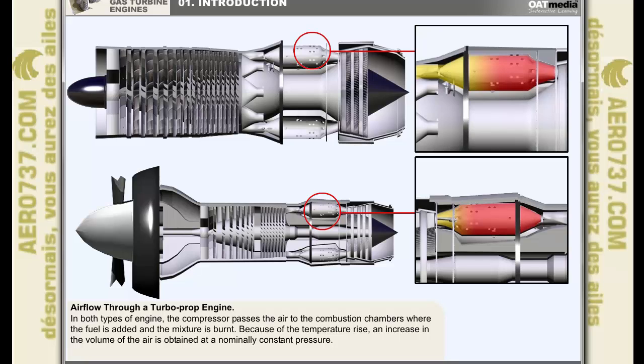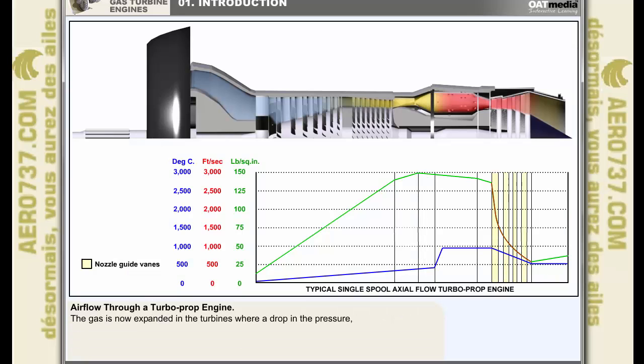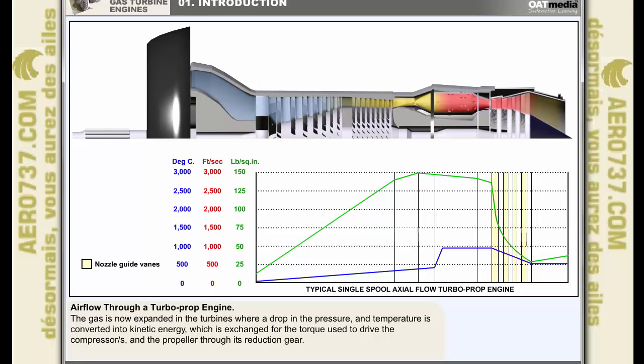Apart from this difference, the airflow through the engines is virtually the same in either case. The compressor passes the air to the combustion chambers where the fuel is added and the mixture is burnt. And because of the temperature rise, a substantial increase in the volume of the air is obtained at a nominally constant pressure. The gas is now expanded in the turbines where a drop in the pressure and temperature is converted into the kinetic energy which is exchanged for the torque used to drive the compressor or compressors and the propeller through its reduction gear.